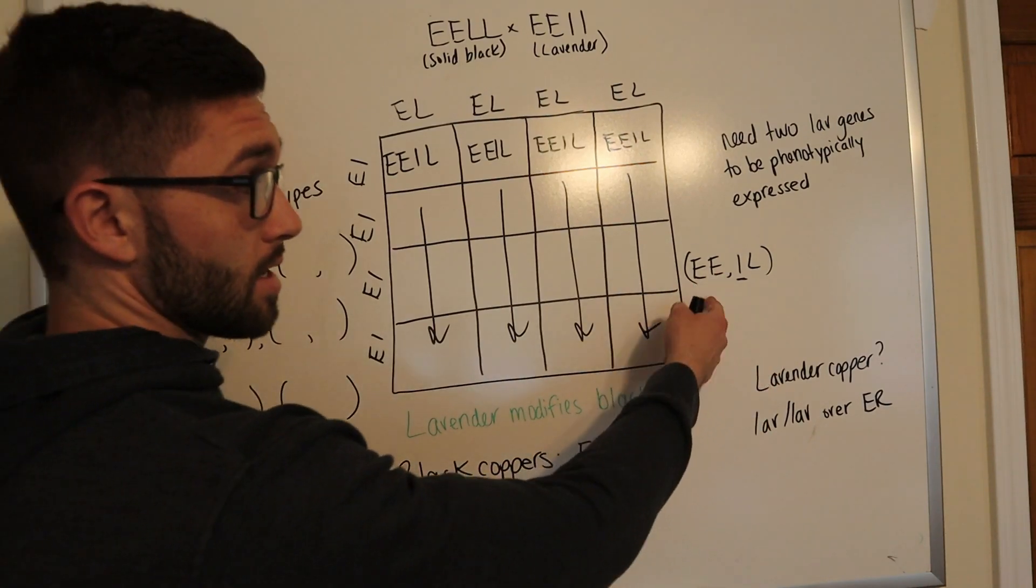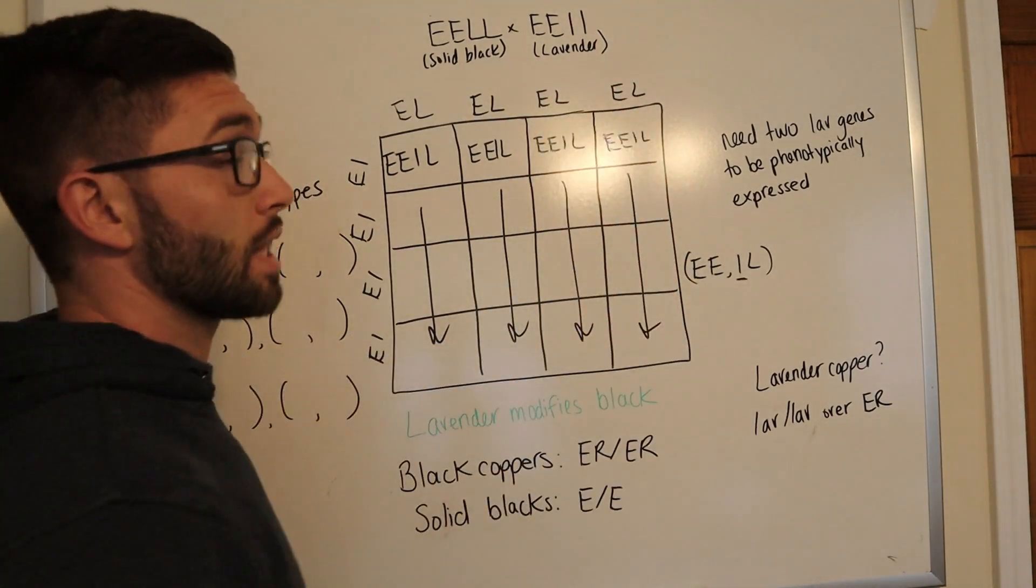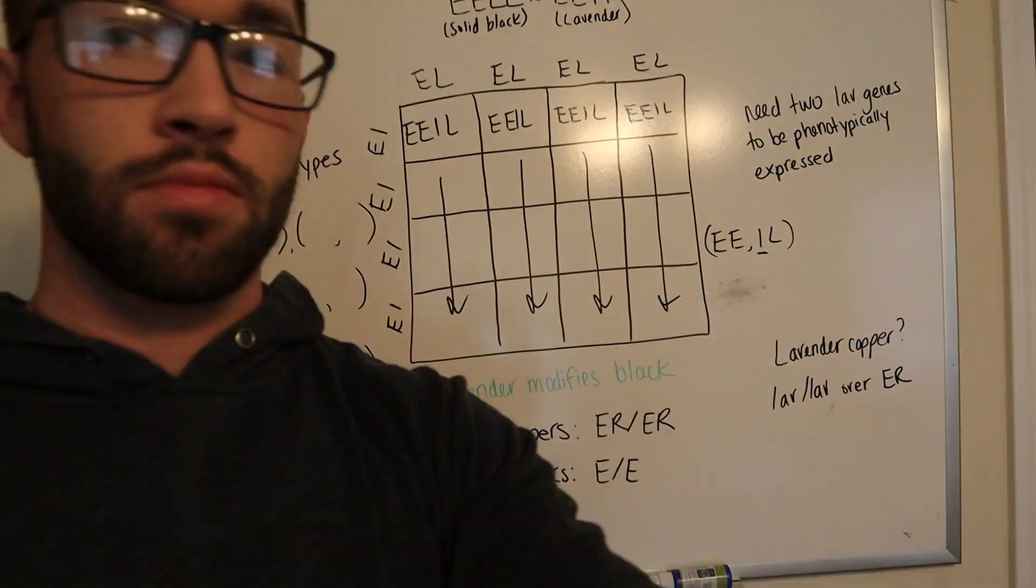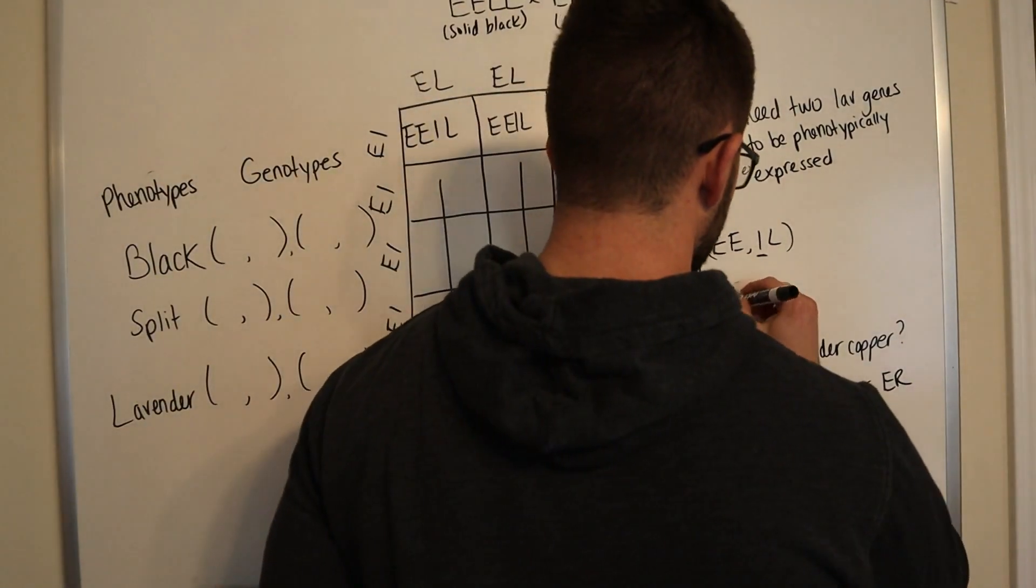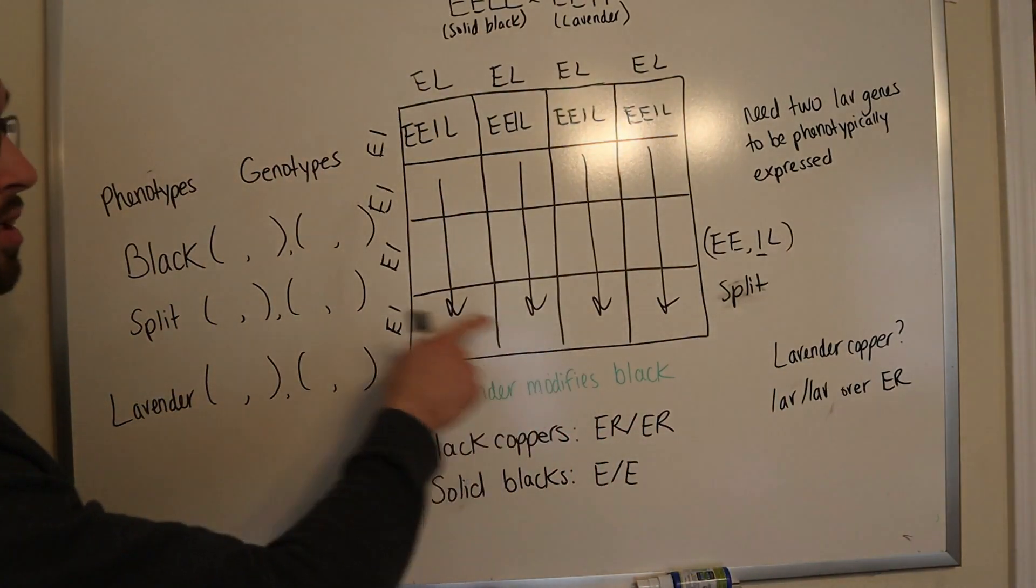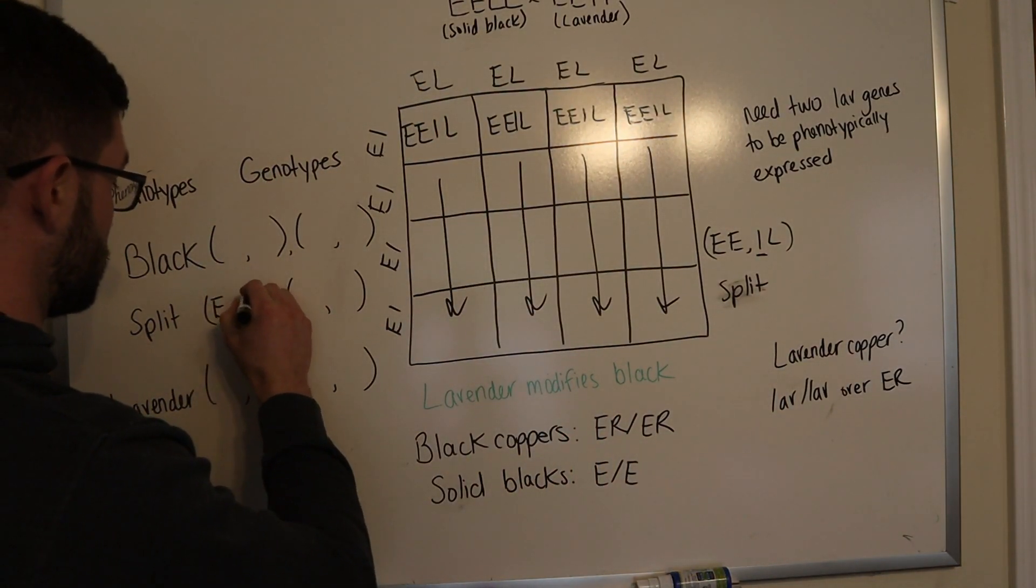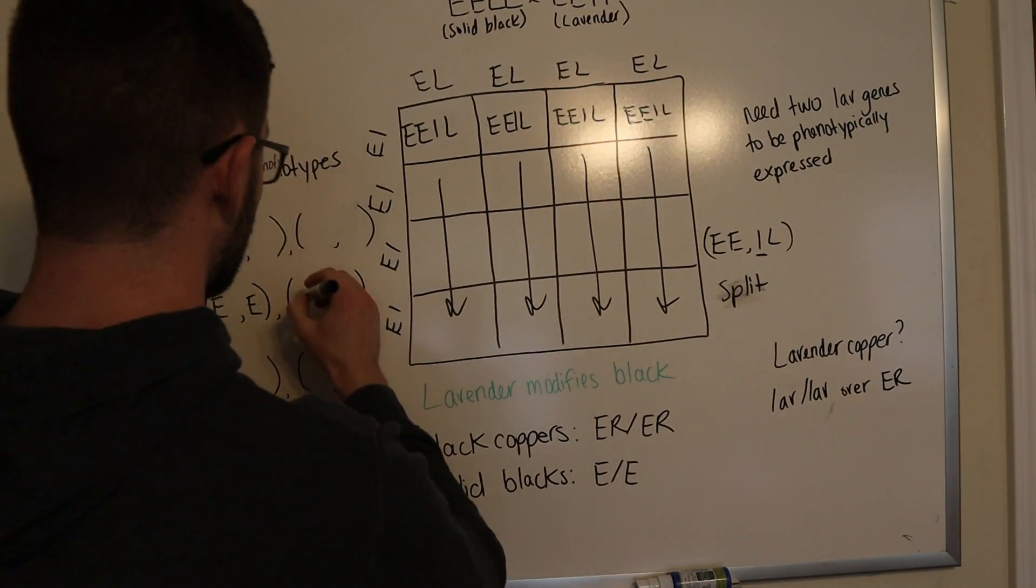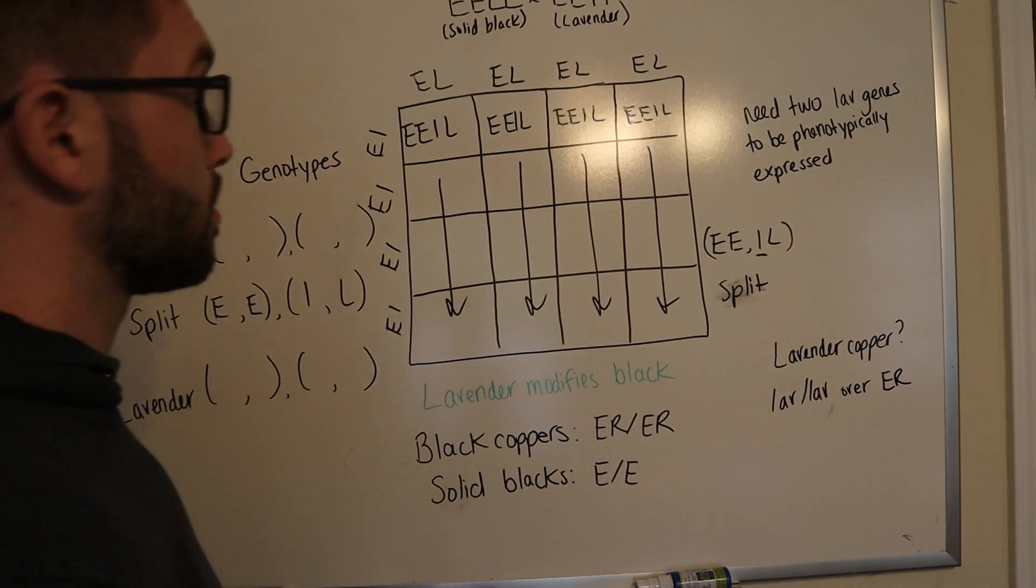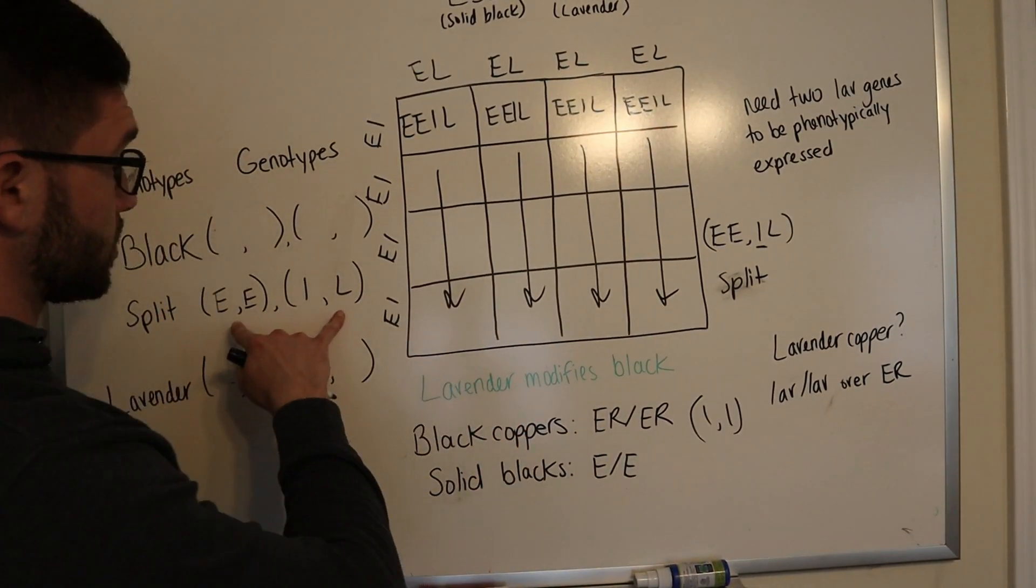So if you were to take all of the offspring from this cross and back cross to a lavender, some would be split, which is what this is called. And so I'll write the genotype over here of split. And that would be E, E. And then it only carries one lavender allele. Since all of the offspring are split, and I filled in the genotype here,